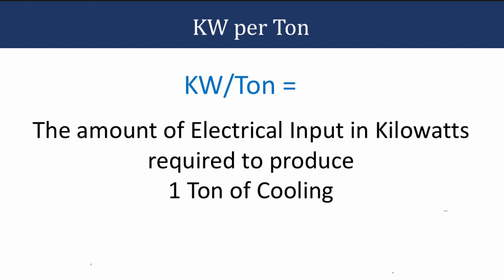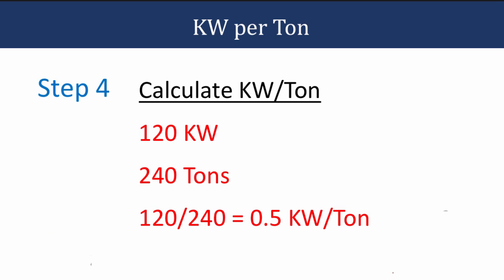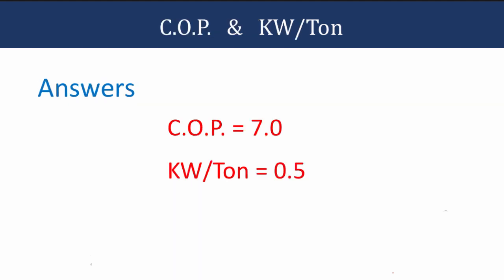Now let's get our KW per ton. KW per ton is the amount of electrical input in kilowatts required to produce one ton of cooling. The less power we put in to produce that tonnage of cooling, the more efficient the equipment is. To calculate KW per ton, we put the KW on top and the tons on the bottom: 120 KW divided by 240 tons gives us 0.5 KW per ton. So our COP is 7 and our KW per ton is 0.5.